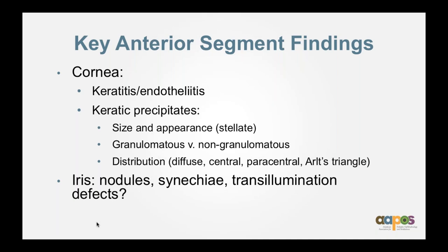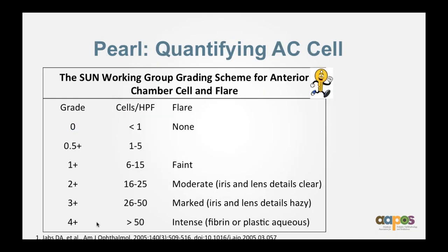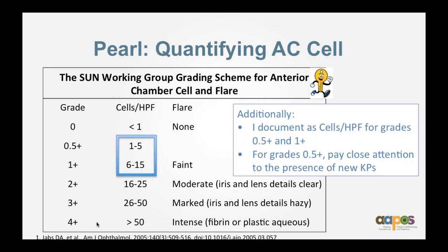Examine the iris: are there nodules? That leads you down the differential of a granulomatous disorder, along with synechiae and transillumination defects. For quantifying AC cell, the SUN Working Group has standardized this for all. Do not use the word 'rare cell' as it's not part of the SUN nomenclature. If there's less than one cell per high power field, that's a grade zero. Document the number of cells per high power field for 0.5+ to 1+. For grade 0.5+, pay close attention to new KP at follow-up when trying to determine low-grade activity.